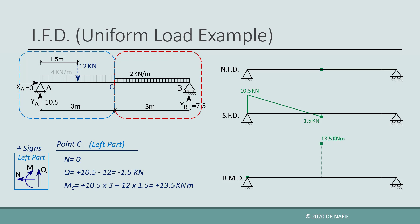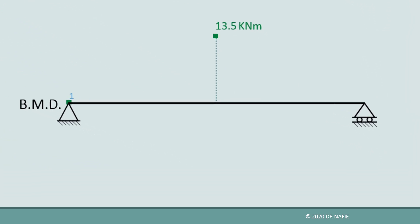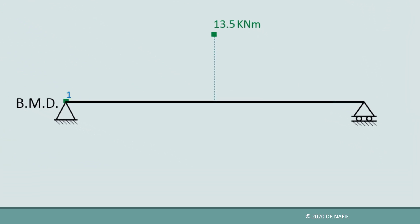However, we cannot connect this value to the value at point A using a straight line, because the existence of the uniform load causes the diagram between points A and C to be a parabola, as will be detailed next. Let us name the point that represents the moment at point A as point 1, and the point which represents the moment at C as point 2, as shown.